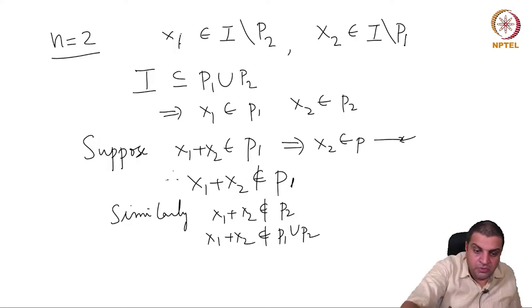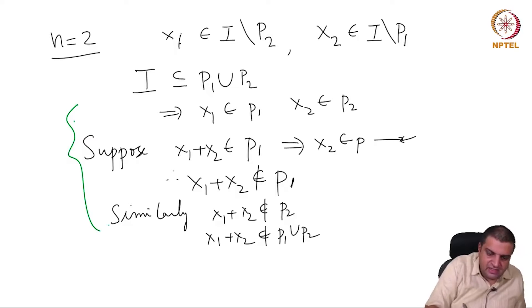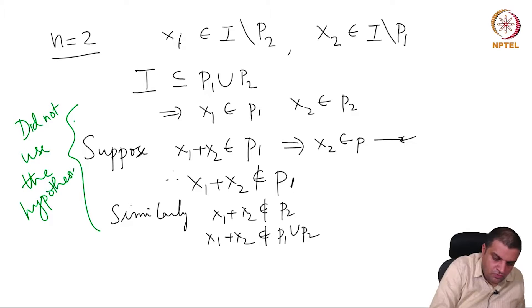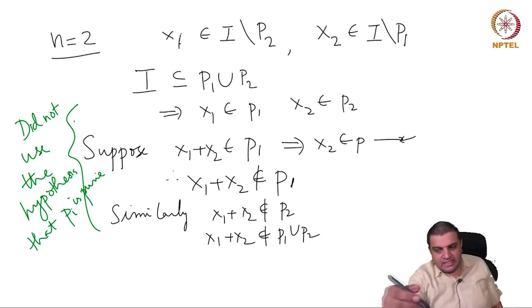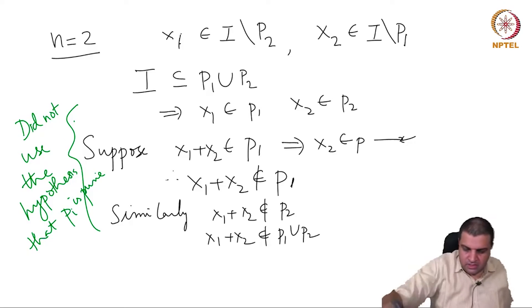One observation here, which is not relevant for this proof but is relevant for an exercise: we did not use the fact that Pᵢ is prime. The first two ideals P₁ and P₂ need not be prime ideals. That is the observation we take from this, which is relevant for one of the exercises.